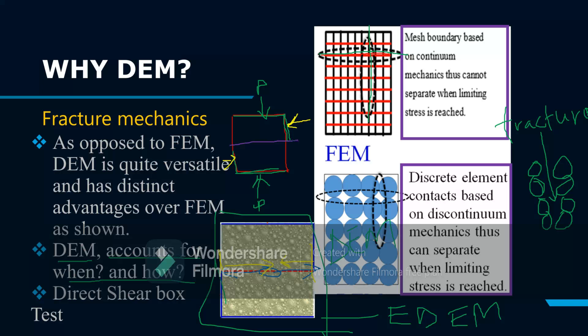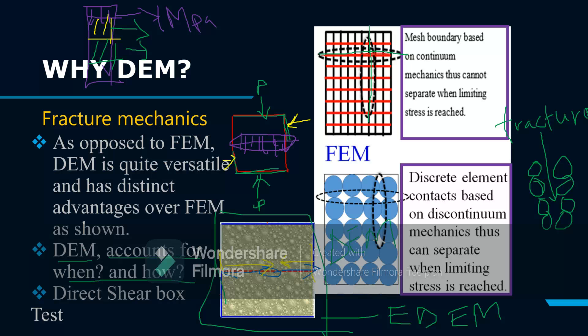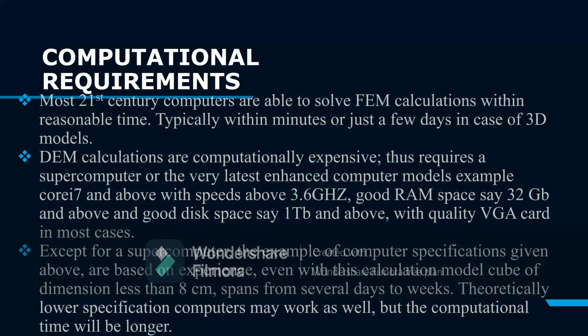For FEM, you just get a color code — maybe you're told this is one MPa, here another color code, and down here another color code. This is all you can get in finite element. But if you're interested in fracture mechanics, you're not able to see how the bonds break and how the fracture initiates and evolves over time. This is why we prefer discrete element modeling.